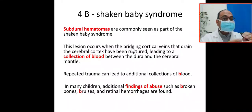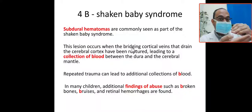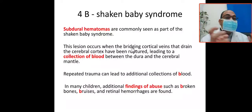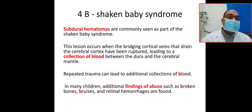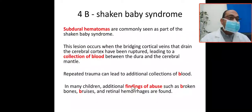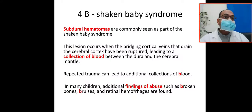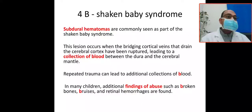The cortical veins that drain the cerebral cortex have been ruptured, leading to collection of blood between the dura and the cerebral cortex due to repeated trauma. Additional findings with child abuse will be the 4 B's: broken bones, bruises, blood in the eye — retinal hemorrhage — or in the brain — subdural hemorrhage — and burning marks.